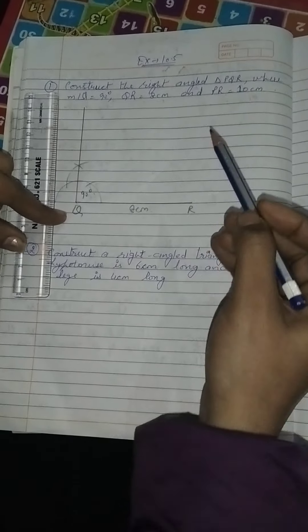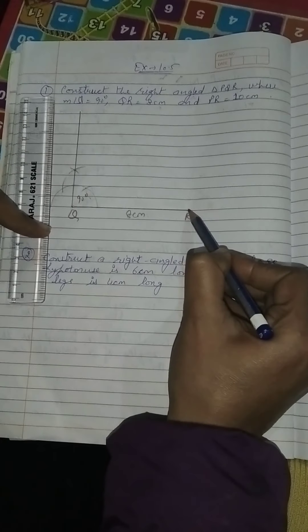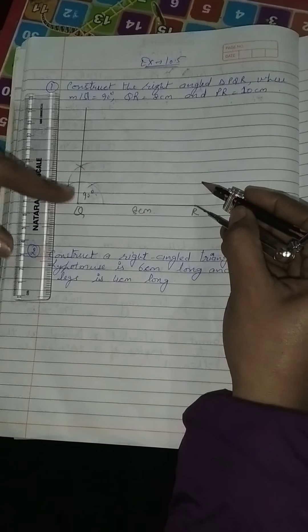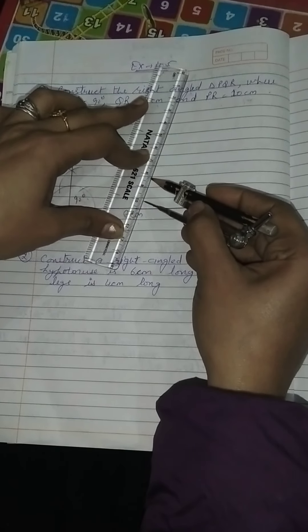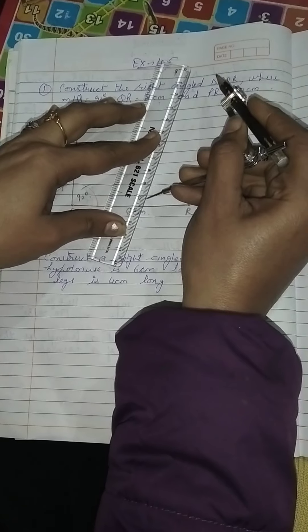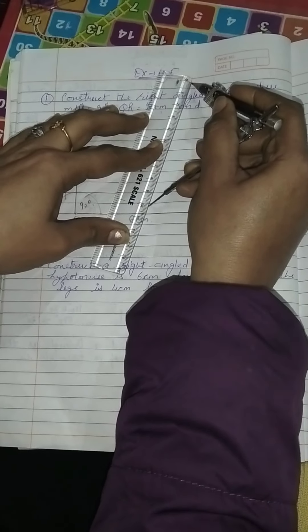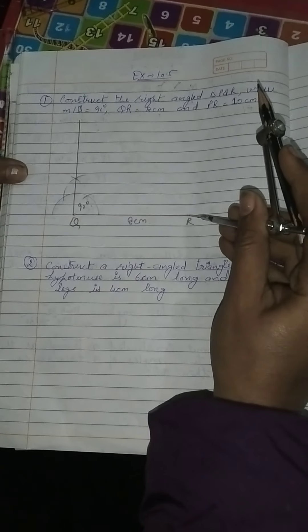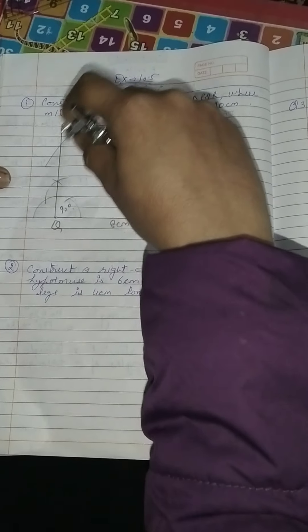QR 8 cm is already taken. Now we need PR 10 cm. Since one point is R, we will place the compass on R and open the compass to 10 cm. Keep the scale fixed and take the exact measurement of 10 cm. Now the measurement is set — place the compass on point R and the pencil tip will go and cut the 90 degree line.